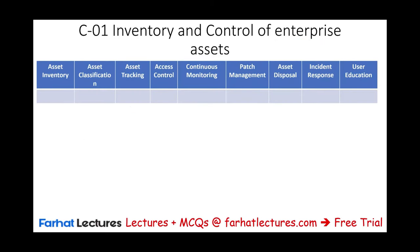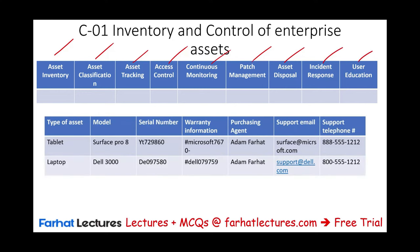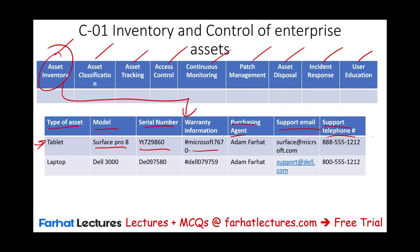For inventory and control of enterprise assets, we need asset inventory, asset classification, asset tracking, asset control, continuous monitoring, patch management, asset disposal, incident response, and user education. For asset inventory, we keep track of each asset — its type, model, serial number, warranty information, purchasing agent, support email, and support telephone number. For example, a Surface Pro 8 tablet with its serial number, and a Dell 3000 laptop, and so on. You can track inventory electronically, on an Excel sheet, or on paper.